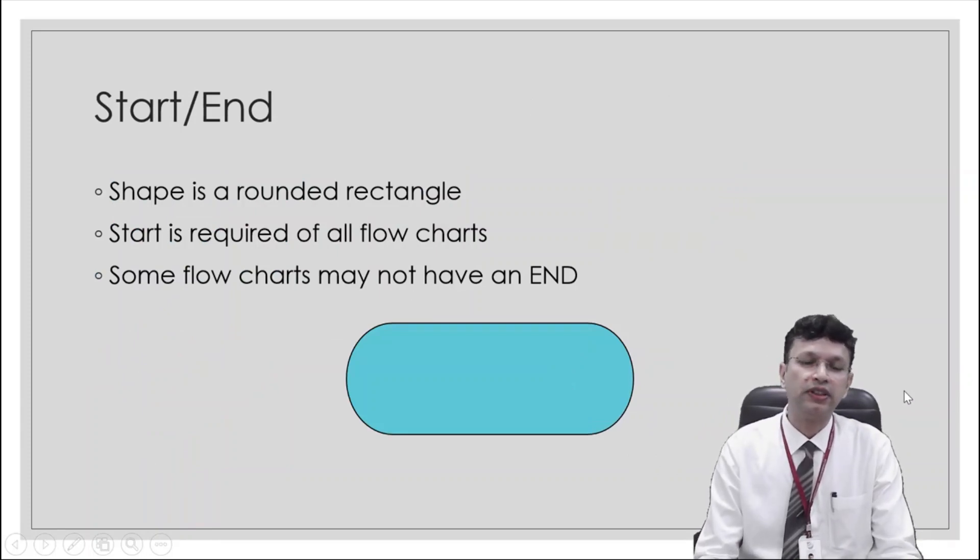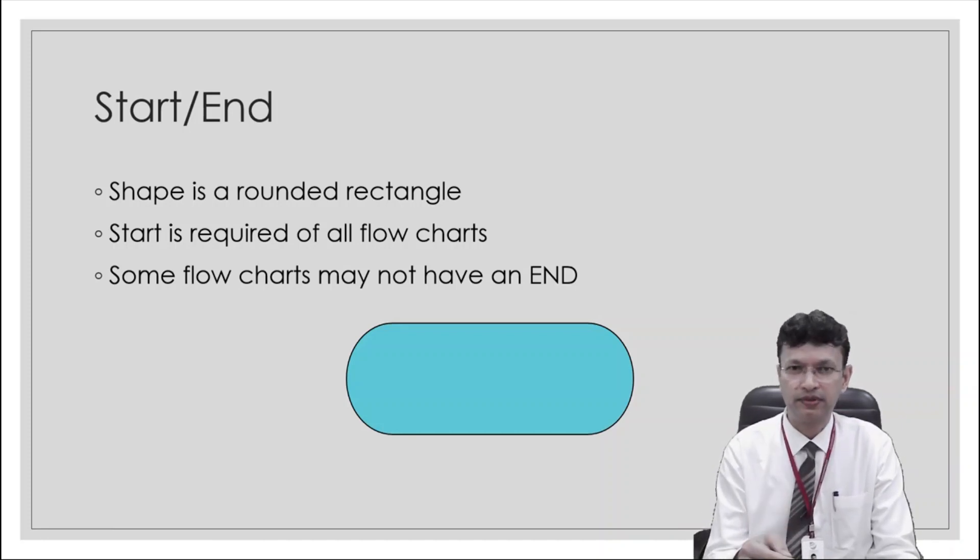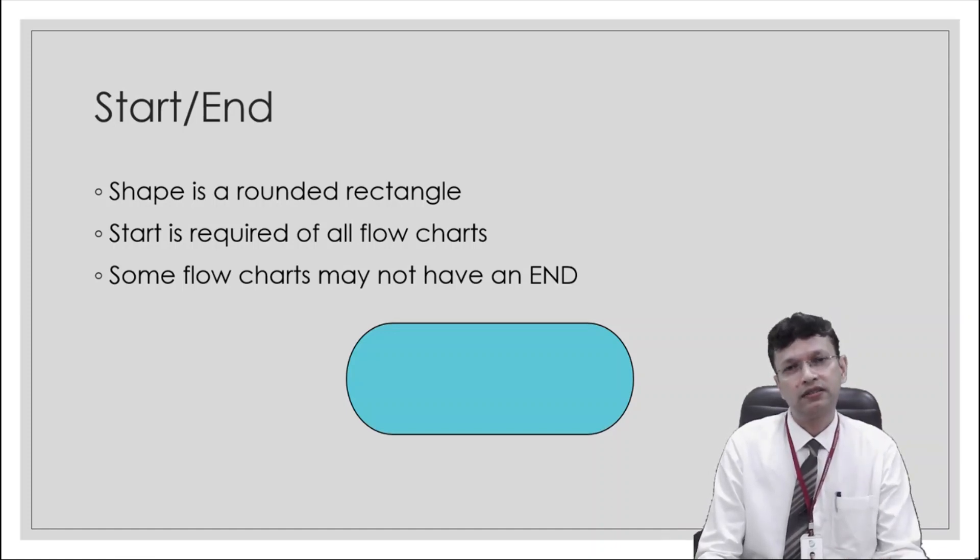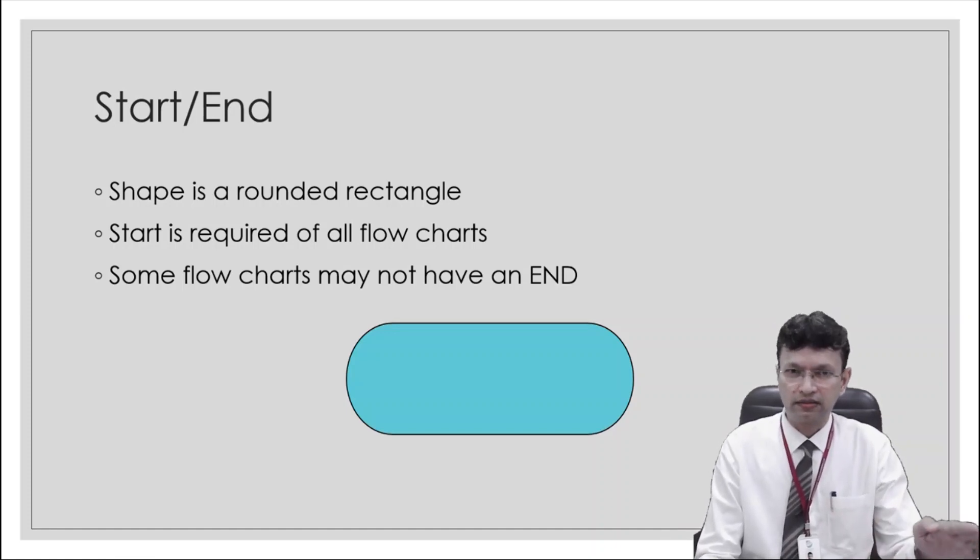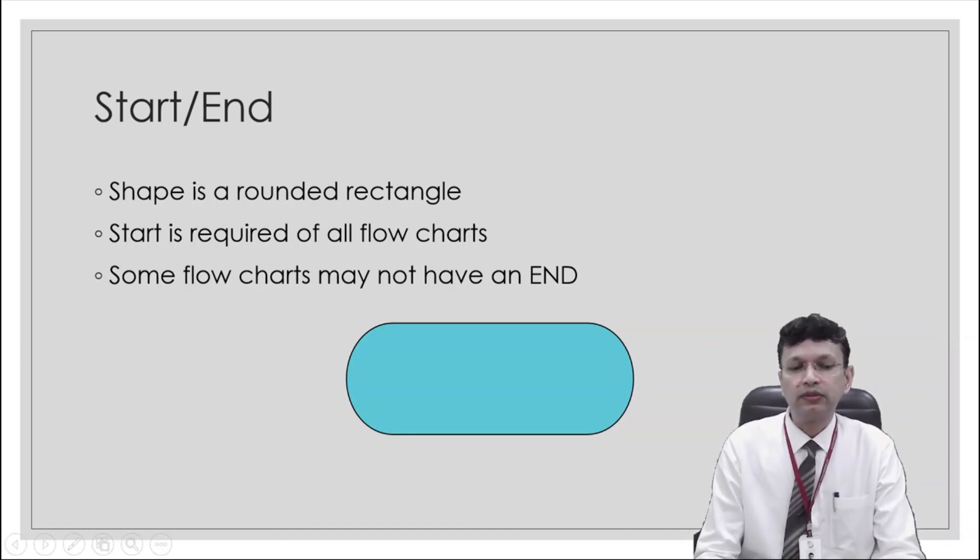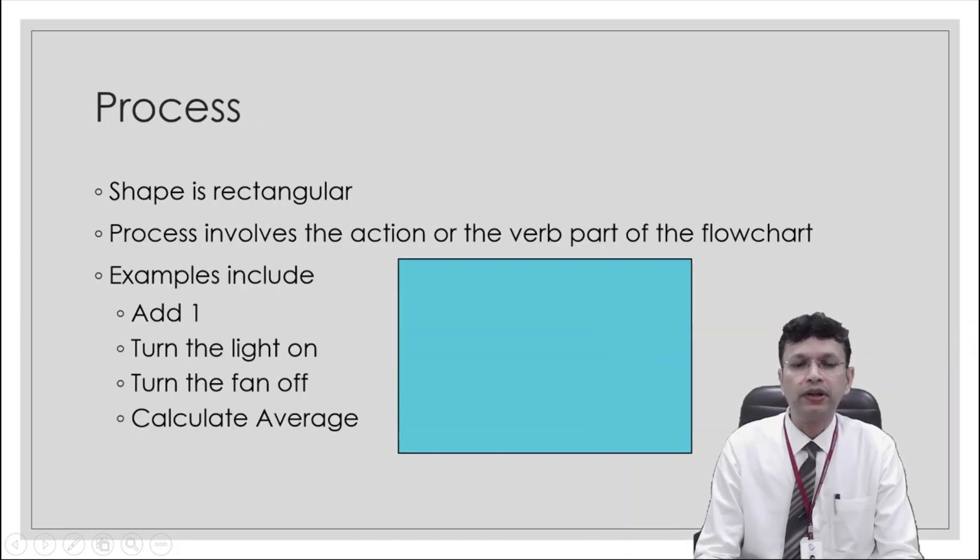So let's come to the first one. Start and end. Now this shape is a rounded rectangle. Now start is required for all flowchart. You need to have a starting time of the process when we need to start that. Some flowcharts may not have an end because there are certain processes which don't end like on systems. So some of the flowcharts may not have an end but starting will be always there.